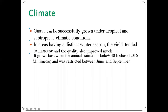Regarding climate, guava can be grown under tropical as well as subtropical climatic conditions. Areas having a distinct winter season produce higher yields with better quality fruits. Annual rainfall for its growth should be below 40 inches.